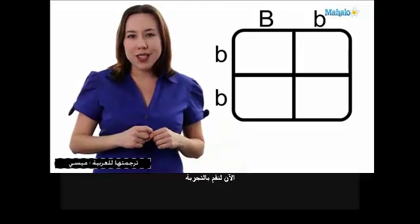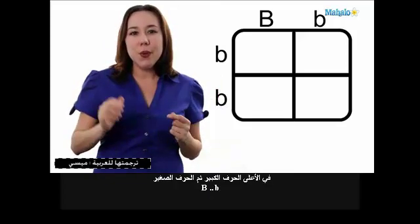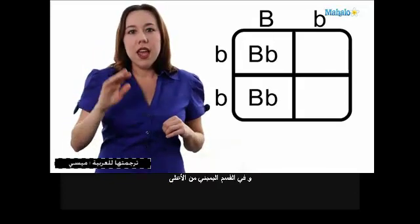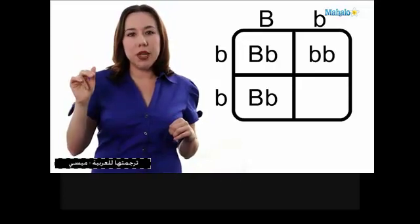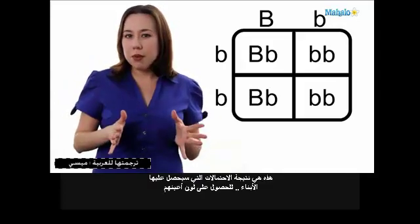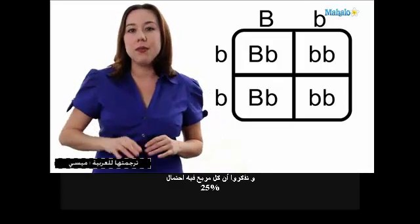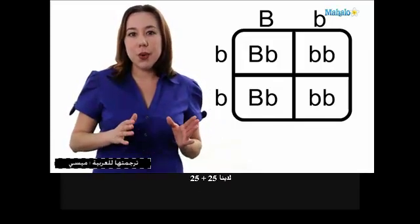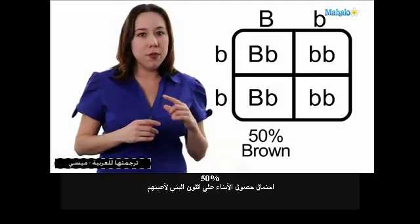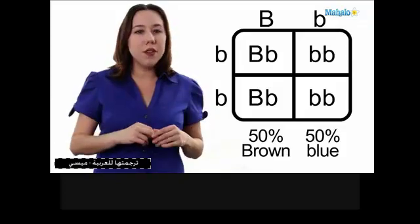Alrighty, it's time to do our cross. We're going to take one from the top and one from the left, and bring them down into those squares. On the top we have big B, little b. Bringing big B down gives us big B, little b in the left squares. In the top right square we have little b, little b. And in the bottom right square, we also have little b, little b. What does that mean for the probability of getting an offspring with a certain eye color? Remember, each of those squares is 25%. So we have a 25 plus 25, or 50% chance of getting an offspring with brown eyes, and a 50% chance of getting an offspring with blue eyes.